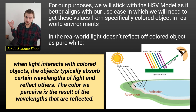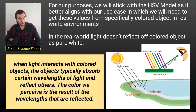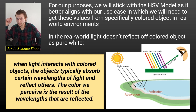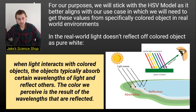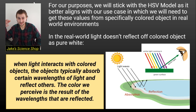Our eyes are able to process all of this light as colors. When light interacts with colored objects, the objects typically absorb certain wavelengths and reflect others — relating to physics phenomena such as absorption, reflection, refraction, and dispersion, like a rainbow. The color we perceive is the result of the wavelengths that are reflected. Understanding the way our vision works really helps us understand how to incorporate it with computer vision.